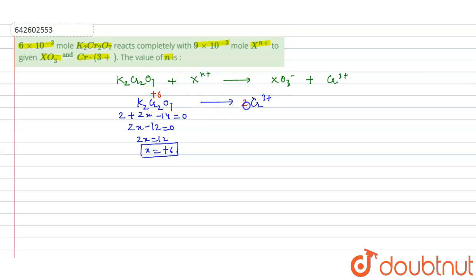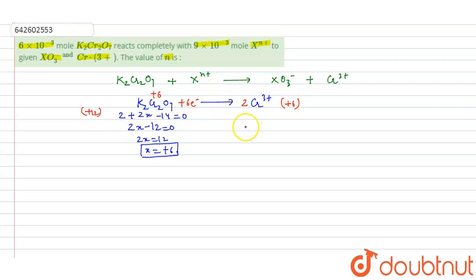There are 2 chromium atoms, so we balance: for one chromium it is +6, so the charge will be +12 on the left-hand side, and the charge on the right-hand side is +6. To balance the charge, we add 6 electrons. The negative charge of 6 electrons balances the charge. So the number of electrons transferred is 6, and the valency factor for the conversion of K₂Cr₂O₇ to Cr³⁺ is 6.